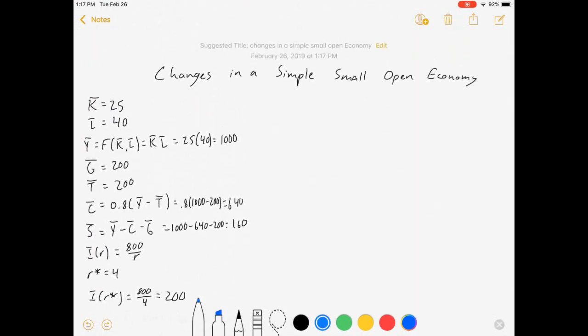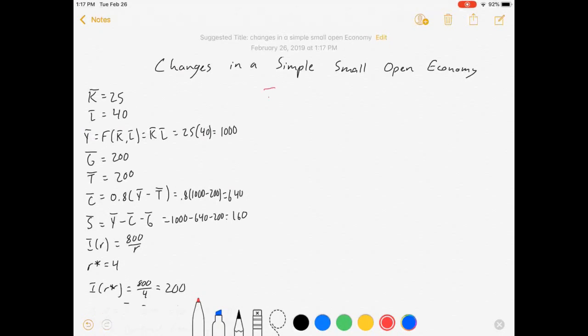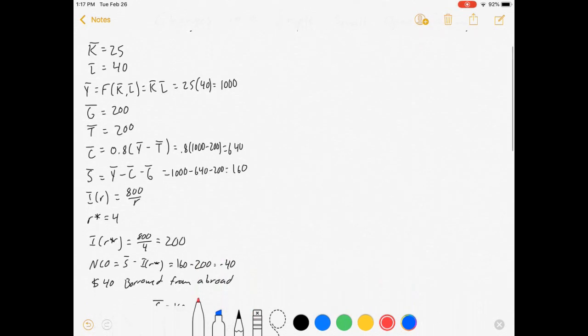Let's change it. First change, let's try a tax cut. I'm going to leave capital, labor, everything else the same. I just want to set a new T-bar equals 100. So consumption equals 0.8 times 1,000 minus 100, which is 720.